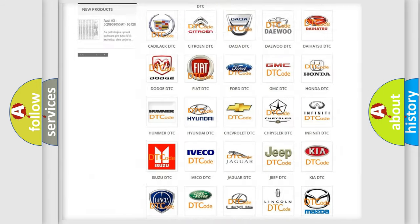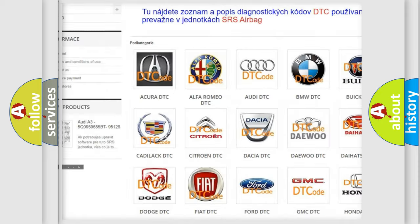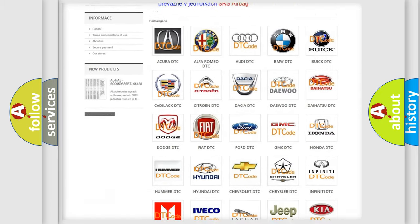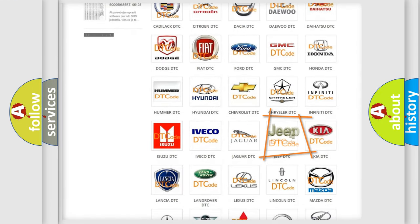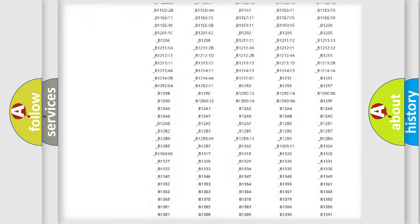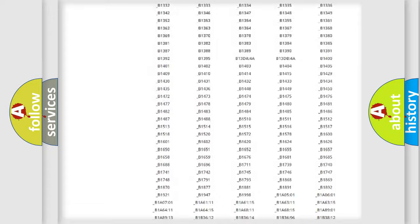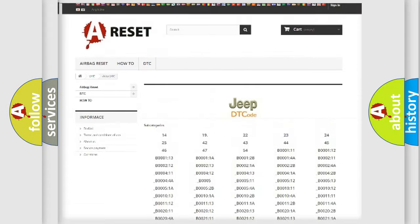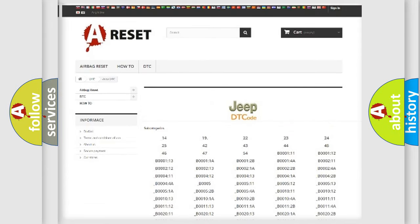Our website airbagreset.sk produces useful videos for you. You do not have to go through the OBD2 protocol anymore to know how to troubleshoot any car breakdown. You will find all the diagnostic codes that can be diagnosed in Jeep vehicles, and also many other useful things.